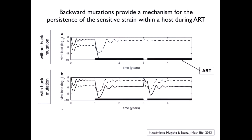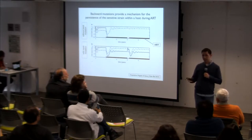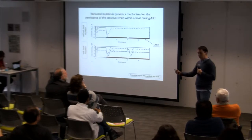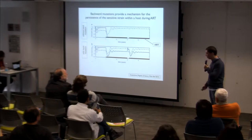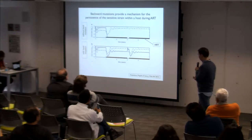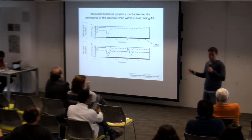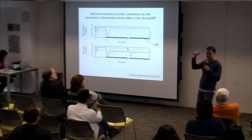The interesting thing is that these backward mutations actually provide a mechanism for the persistence of the drug sensitive strain. If we stop giving the drug therapy, the drug sensitive strain will reappear very soon after. It's a simple mechanism — not very surprising, but several studies don't pay much attention to it. It depends on the context and the question we're asking, but it's something we shouldn't forget about.